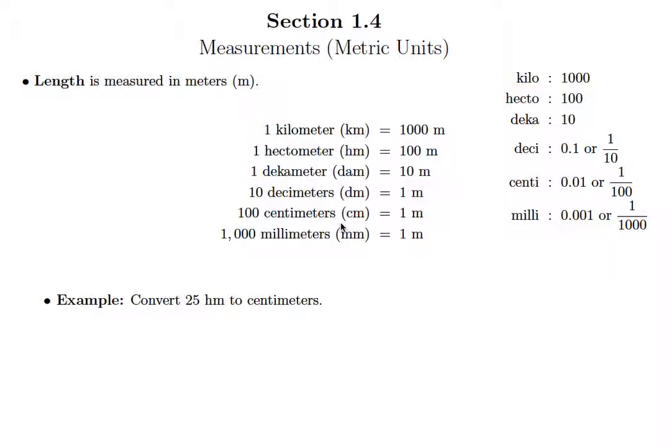The metric system is based off of trying to keep things as simple as possible. Let's start off with length. We're going to measure length in meters, and we'll abbreviate that with just simply the letter m.